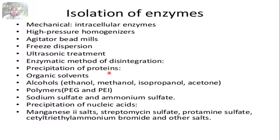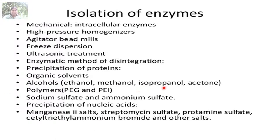The first step is homogenization or cell disruption. You take a plant cell, animal cell, or bacterial cell and disturb it to release the intracellular enzyme. This can be done by mechanical methods using high-pressure homogenizers, agitated bead mills, freeze disruption, or ultrasonic treatment.